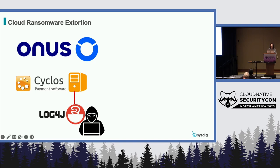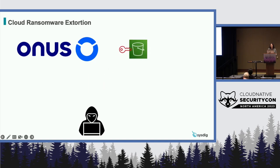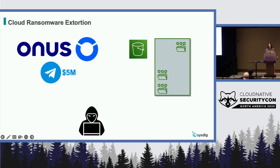Onus patched their Cyclo servers as soon as a patch was released for Log4j, but by that point it was already too late — they were already compromised. The attackers used a tunnel, established a remote shell, and discovered a configuration file holding full-access AWS credentials. They were easily able to use those to access Onus's S3 buckets, where they conducted their extortion scheme. Onus discovered that sensitive customer data had been deleted from these S3 buckets, deactivated the access keys, but again it was too late. The next day, they received a ransomware request for $5 million USD from the attackers via Telegram.